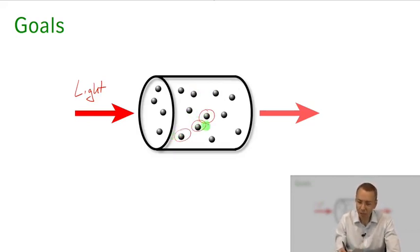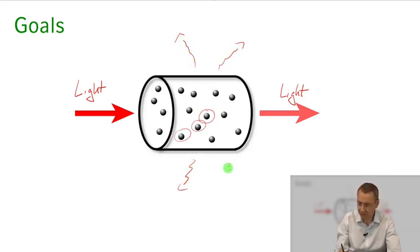These atoms will respond to the light field impinging onto them and we need to characterize the response we get from the atoms. And this response will determine actually how much light comes out. So what happens to the light that comes out of this vapor cell and what happens to light that is scattered from the atoms into different directions.